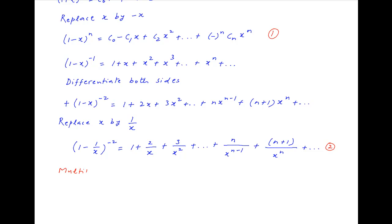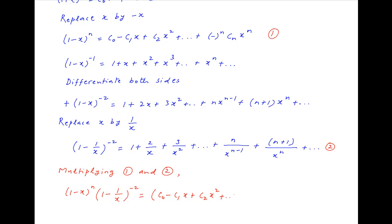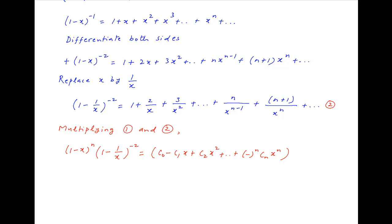Now multiplying results 1 and 2, on the left hand side we get (1 - x)^n * (1 - 1/x)^(-2), and the right hand side equals (c0 - c1*x + c2*x^2 + ... + (-1)^n * cn * x^n) times (1 + 2/x + 3/x^2 + ... + (n+1)/x^n + and so on).